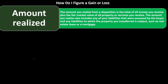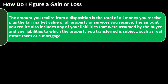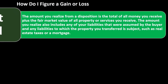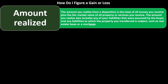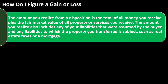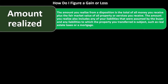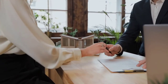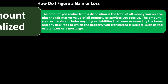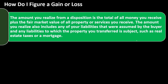Amount realized: the amount you realize from a disposition is the total of all money you receive plus the fair market value of all property or services you receive. If you sell for cash, that's straightforward; if you receive other property you need to value that as well. The amount realized also includes any liabilities assumed by the buyer and any liabilities to which the transferred property is subject, such as real estate taxes or a mortgage — these become most complex in real estate transactions.